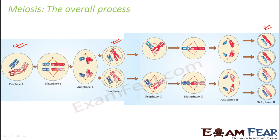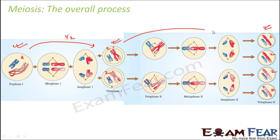Looking at the chromosome numbers: you have four chromosomes in the starting cell, and each resulting cell has two chromosomes — so the chromosome number has been reduced by half. Please do not get confused: this red colored structure is one chromosome. The X-shaped structure is also one chromosome — it is a condensed form with two sister chromatids, but it is counted as one chromosome.